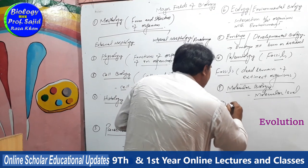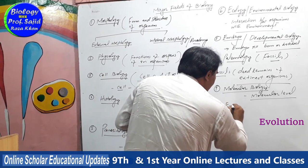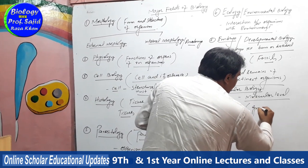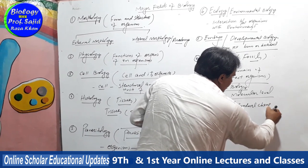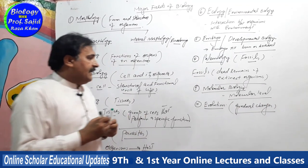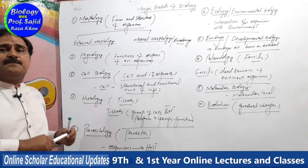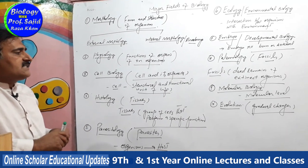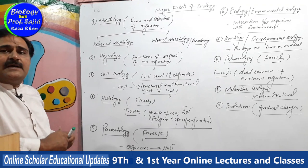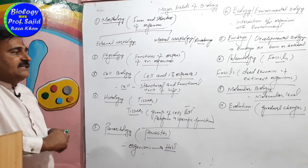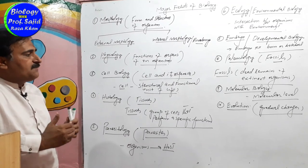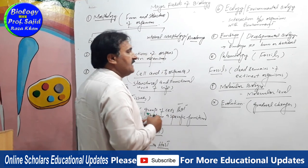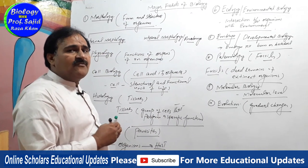The next one is evolution. Evolution is the study of gradual changes in organisms through which new species arise. With the passage of time, changes occur through which organisms move from simple to complex. These gradual changes indicate how new species were evolved. This field is also called the evolutionary history of organisms.